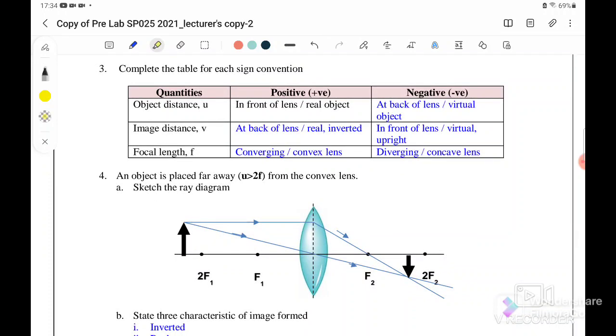Complete the table for each sign convention. For image distance v, when it's positive, meaning that the image formed is at the back of the lens, real or inverted.